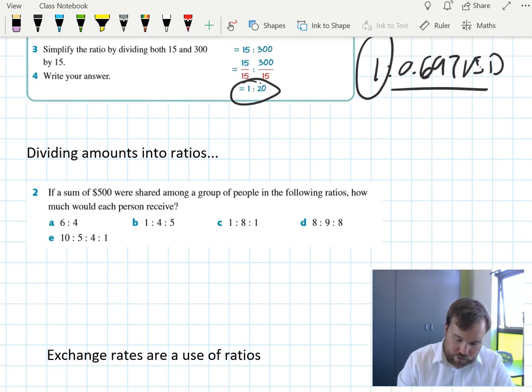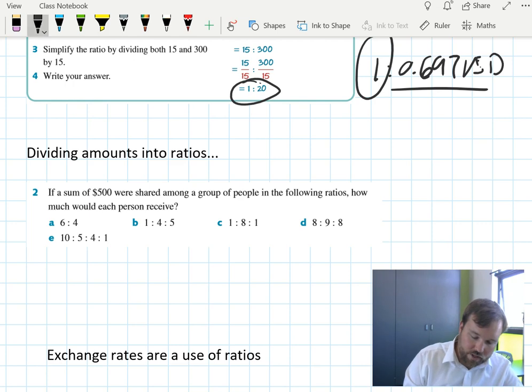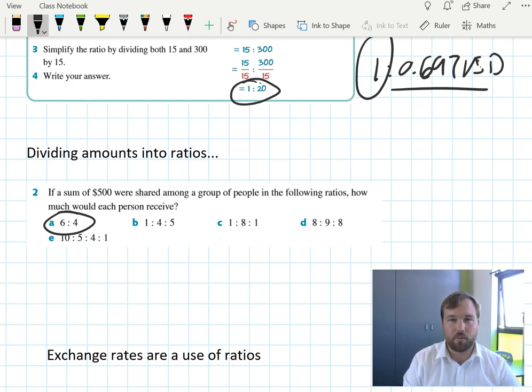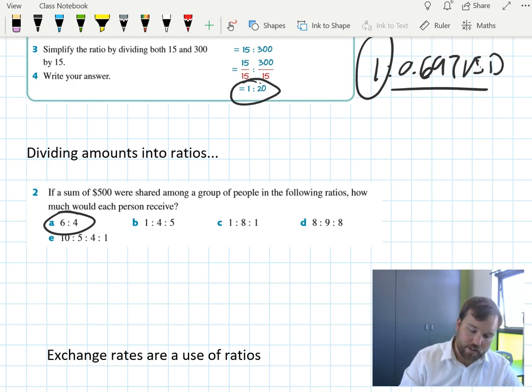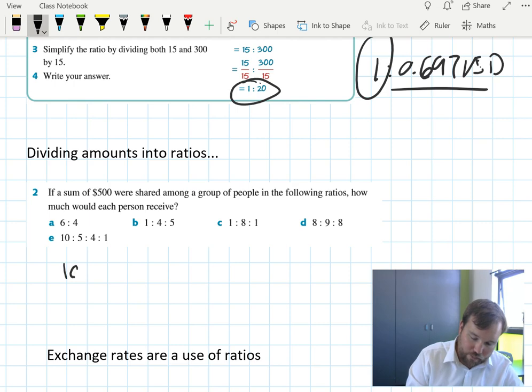If a sum of $500 were shared among a group of people in the following ratios, how much would each person receive? Now, there's a nice way that you can get to work these out. One way is you can simply sort of eyeball it. If it's 6 to 4, well, that's, you can imagine 6 parts to one person, 4 parts to the other person. You can figure out how many parts there are in total. And I like this way of doing it. So in total, there are 10 parts there.